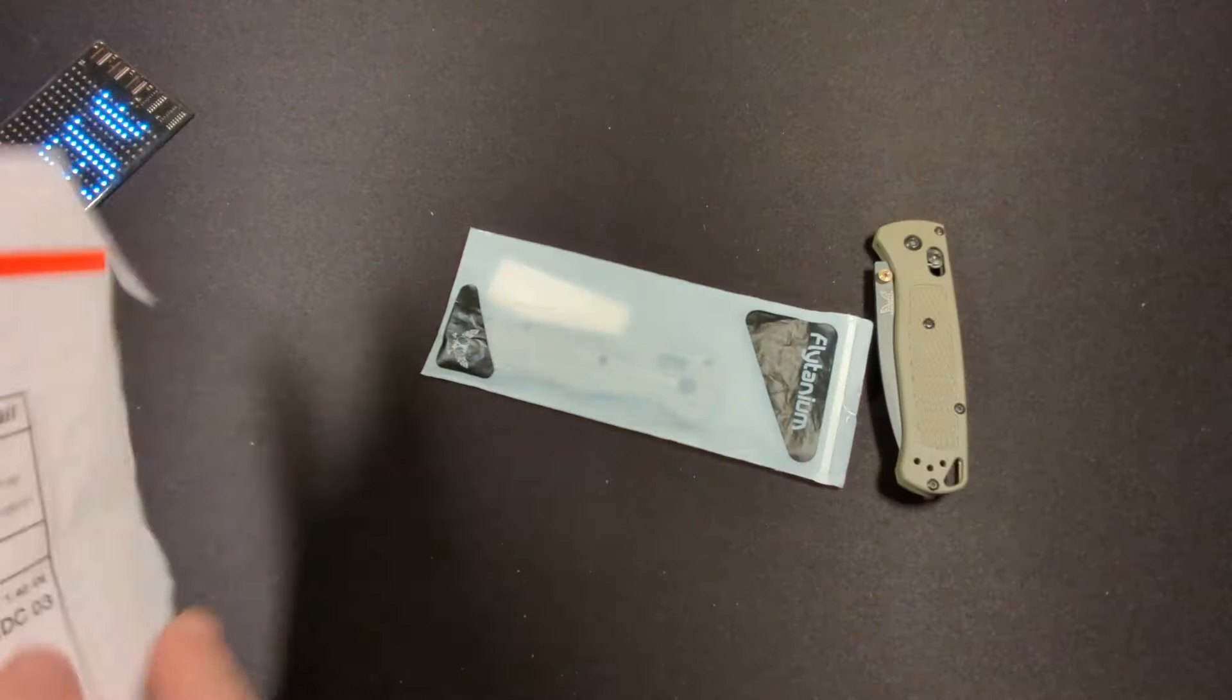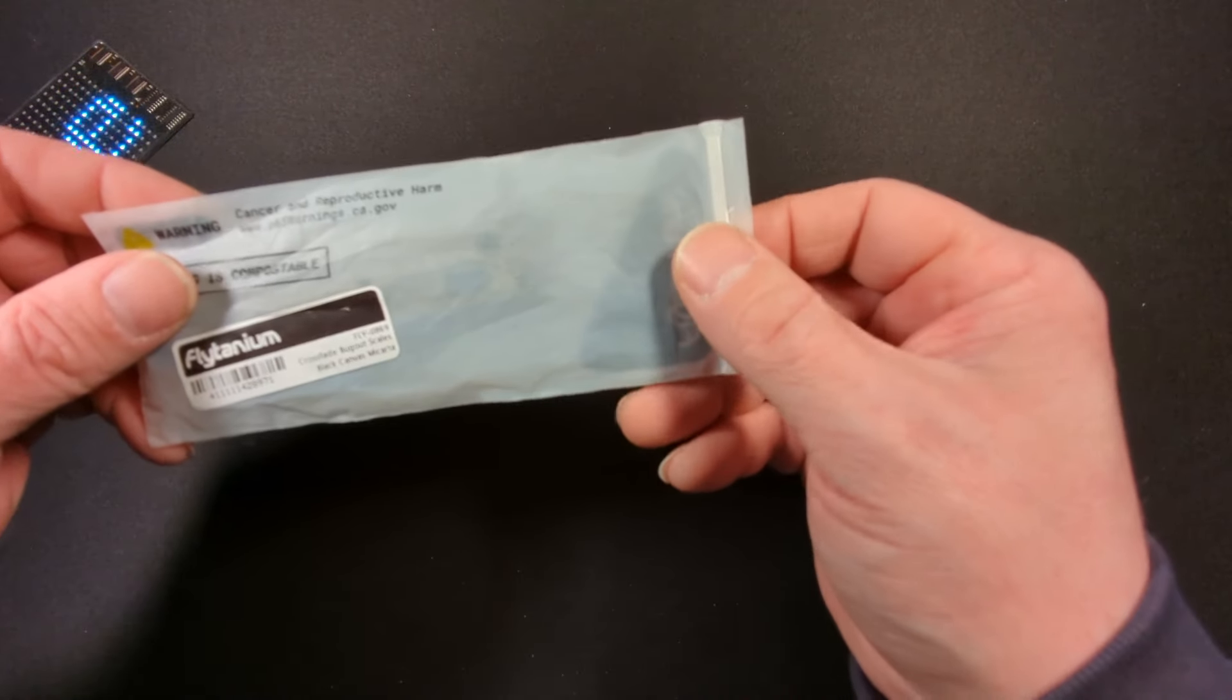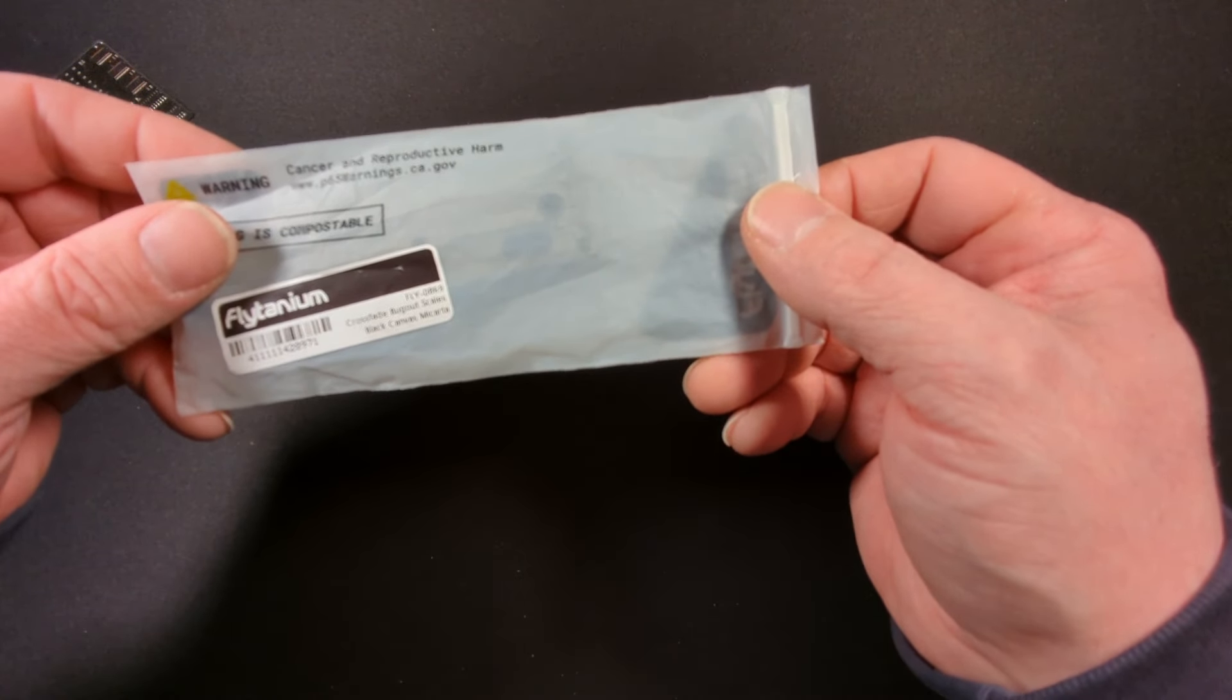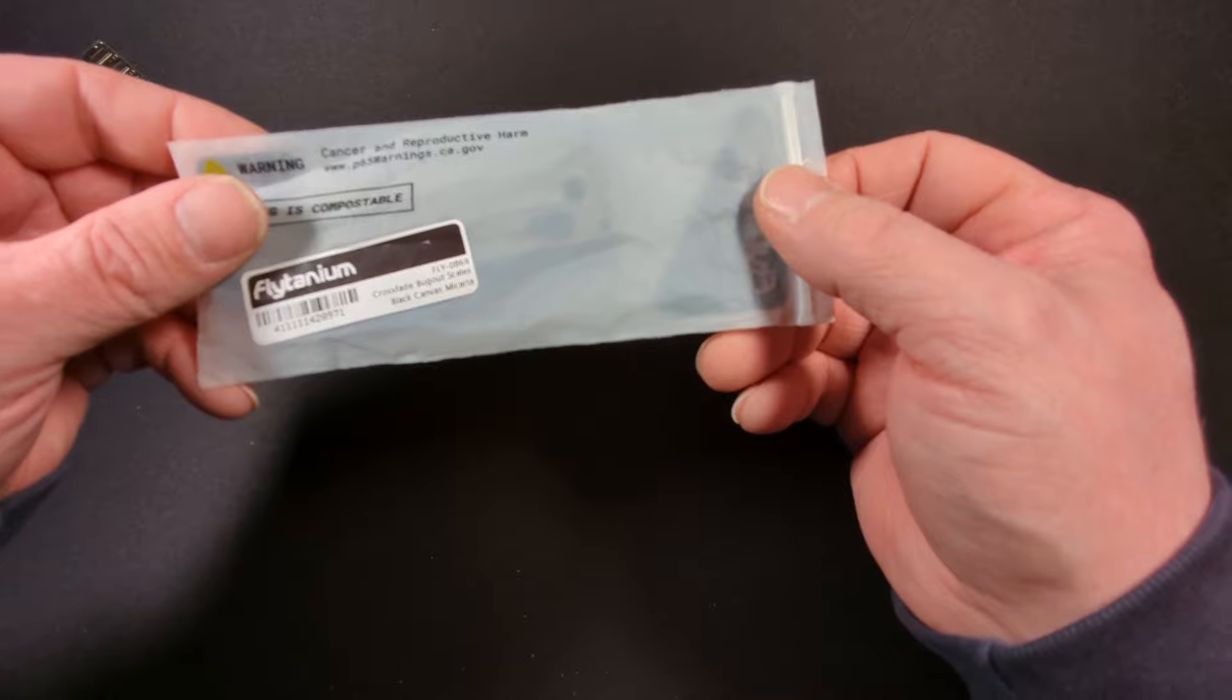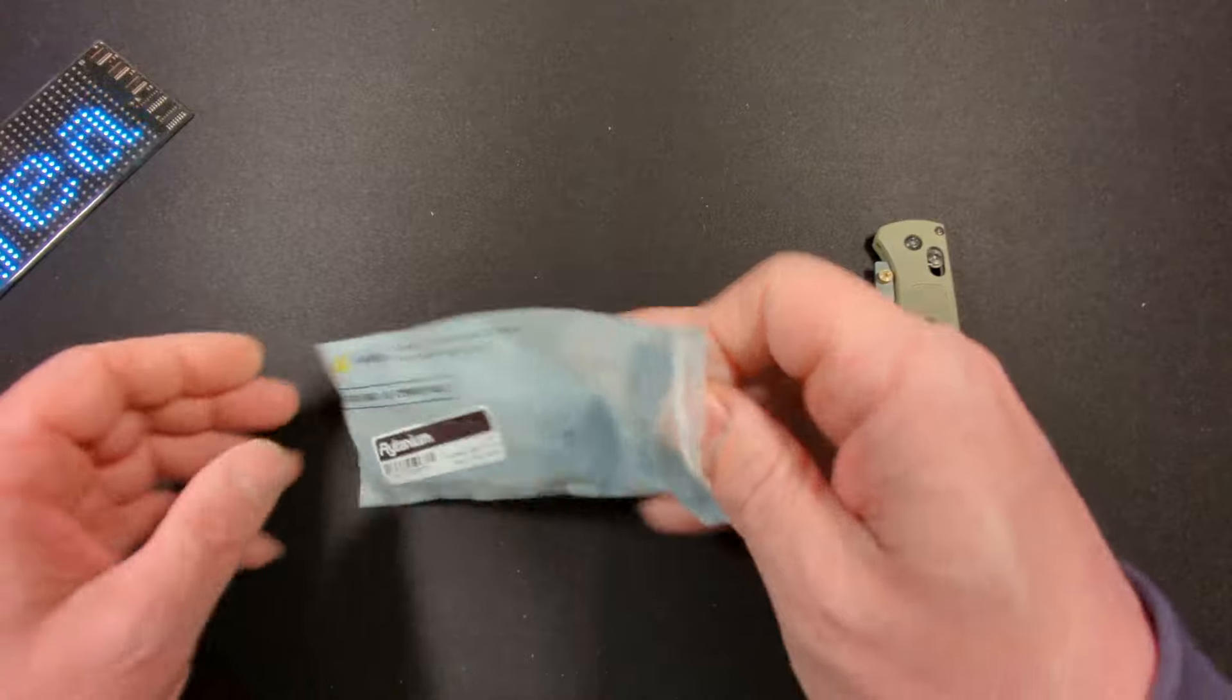Well there it is. So we have some Flytanium scales and in fact these are the Crossfade Bugout scales, black canvas Micarta. Let's break into these bad boys and see what they look like.